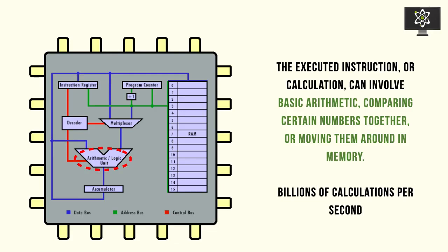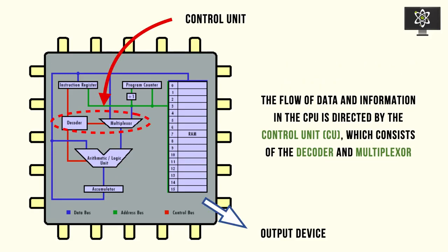These calculations take place billions of times per second per CPU — it's a super, super fast calculator. There are two components critical for data flow inside the CPU that make up the control unit: the decoder and the multiplexer. These link up key channels within the CPU and dictate the flow of data inside it. The decoder and multiplexer are arguably the most important parts of the CPU, allowing for the balance and flow of information to operate effectively.